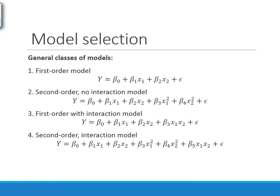Some general classes of models you might consider are first-order and second-order models, which correspond to the largest power of the predictor variables. In the first-order model, predictors appear to the first power; in second-order, we can square the predictor variables. We can also add interaction terms — products of explanatory variables — and combine both of those things together.